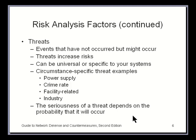The potential for a threat — a probability greater than zero, even one in a billion — poses a risk to your organization's assets. A threat can be universal or specific to your system. An earthquake, flood, or hurricane may be considered universal, while a new worm could be specific to your Windows systems. Circumstance-specific threats include power supply failures, crime rates in your neighborhood, or facility- and industry-related factors.